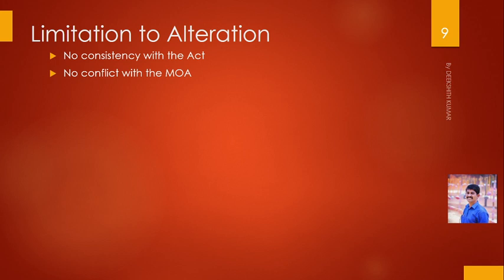If the alteration conflicts with the memorandum of association, it will be ultra vires and wholly void and inoperative. Whatever is stated in the memorandum of association must be implemented in the articles of association. You cannot mention in the articles something that is not in the memorandum. If anything is done beyond the powers of the memorandum of association, that articles of association provision is inoperative or void.